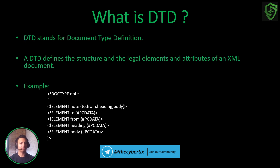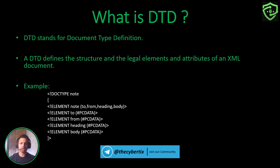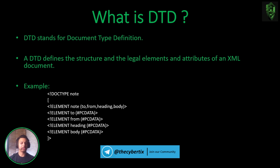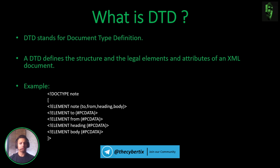For structure-related stuff, we need to understand DTD. DTD stands for Document Type Definition. A DTD defines the structure, legal elements, and attributes of an XML document. It defines how we are going to pass our document or data to another system or server. For example, a DOCTYPE 'note' element contains 'to', 'from', 'heading', and 'body' — each tag has a defined structure.